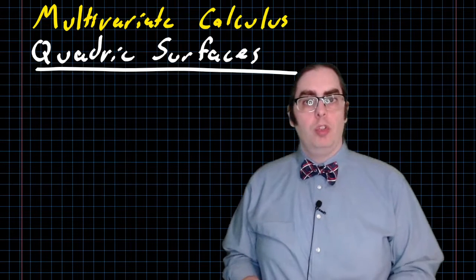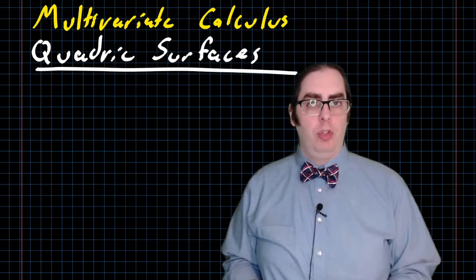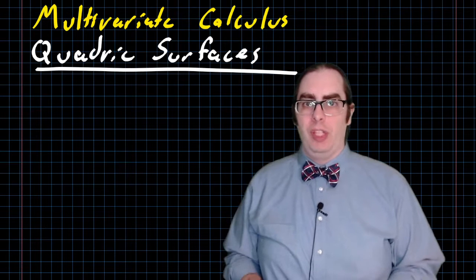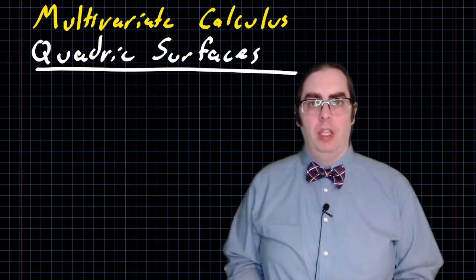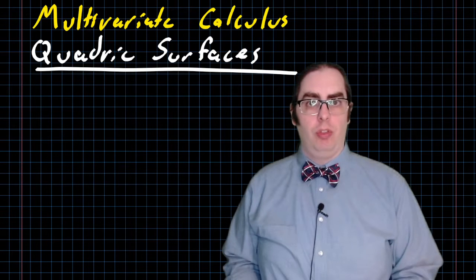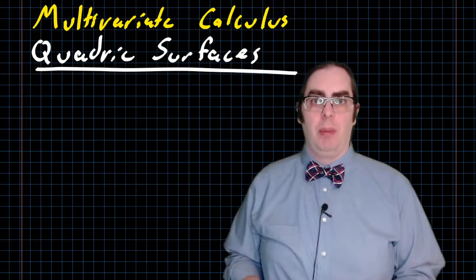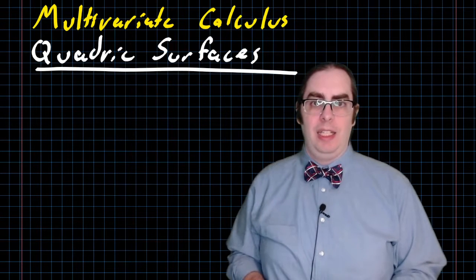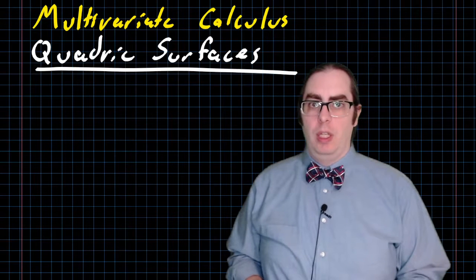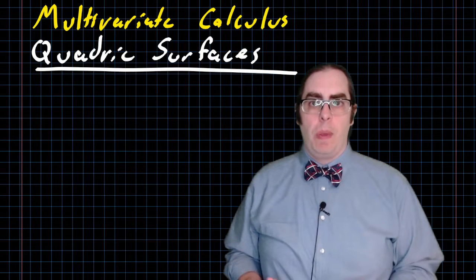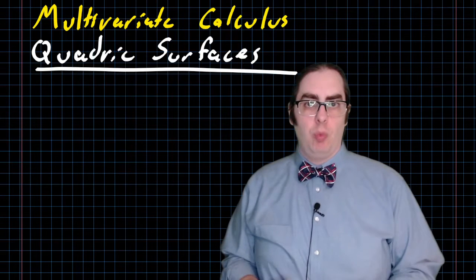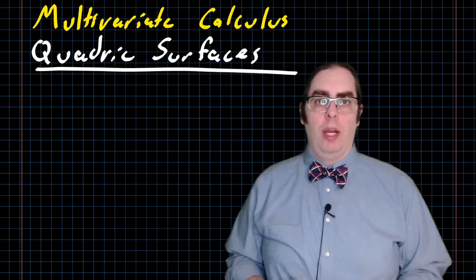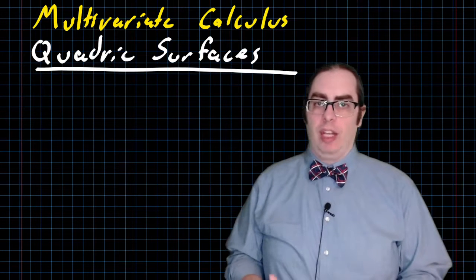When you first learned how to graph an equation in two variables, one of the key ideas that you learned to look for were the x-intercept and the y-intercept. These are relatively easy things to find, and they give you a lot of information about the character of the graph. The traces are exactly that idea in three dimensions. The traces of a graph are the curves formed on the xy-plane, the yz-plane, and the zx-plane where the graph intersects the curve.